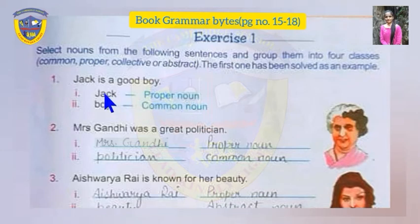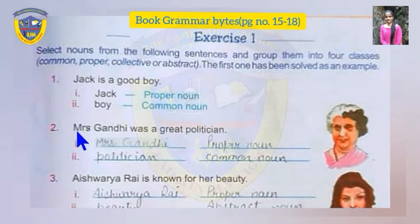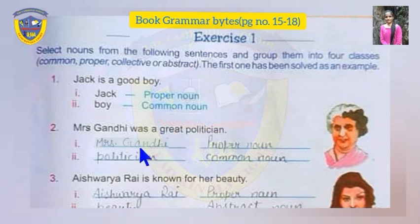Jack is a proper noun because it is the specific name of a person. Second sentence: Mrs. Gandhi was a great politician. Here, Mrs. Gandhi and politician are nouns. Mrs. Gandhi is the name of a specific person, so it's a proper noun. Politician can be anyone, so it's an unspecific name — it's a common noun.